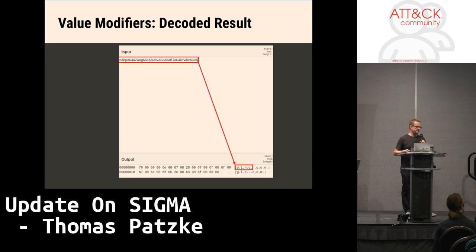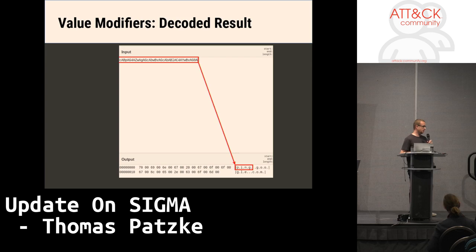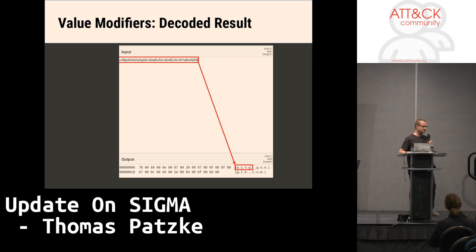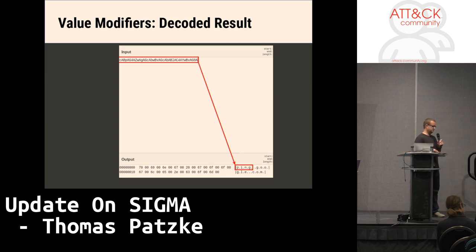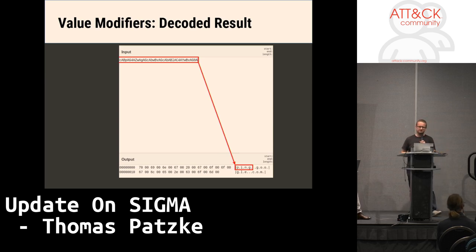It's quite easy to implement new modifiers, so when you have ideas, feel free to open an issue or make a pull request. I also wrote a blog article about it at patzke.org where I sometimes write about Sigma. Usually it's only a few lines of code to write a new modifier.